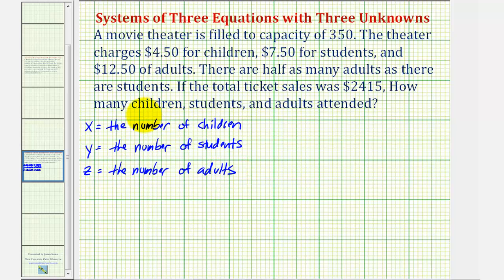Now let's begin to write our system of equations. Since the theater is filled to capacity, x plus y plus z must equal 350.